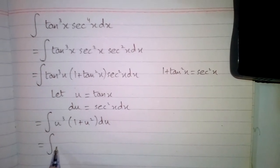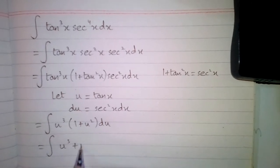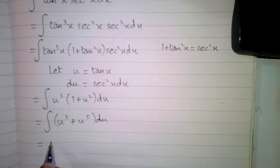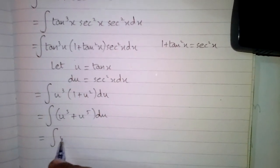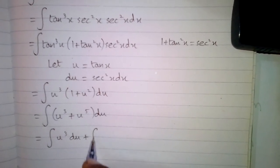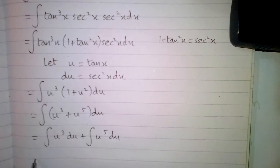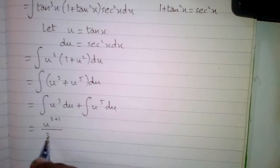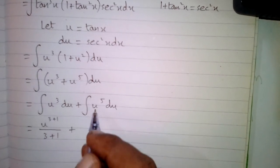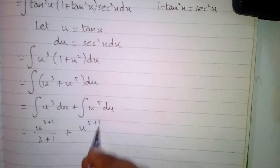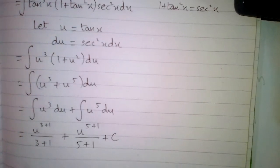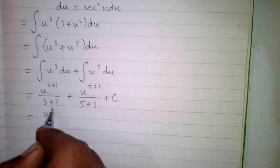After simplifying we have the integral of (u³ + u⁵) du. We will apply the integral on both terms: the integral of u³ du plus the integral of u⁵ du. The integral of u³ is u^(3+1) / (3+1) plus C, where C is the constant.